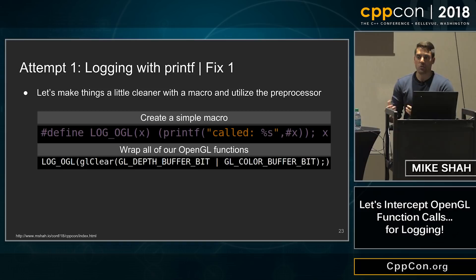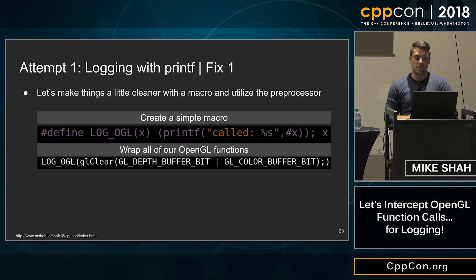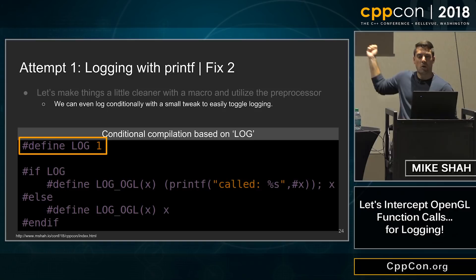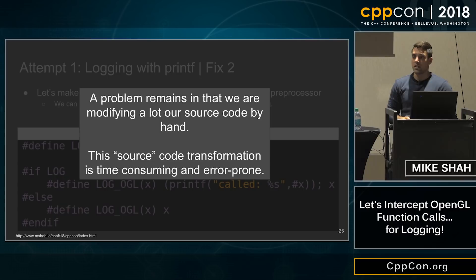We can improve it just a little bit — make things cleaner with a macro, utilizing the preprocessor. I've defined a log OpenGL macro here; we'll just print what was called and then actually do the thing. A little bit better. And we can keep improving this incrementally — give developers a conditional compilation so they can turn logging on by flipping a bit. Not too bad — lightweight if you're doing a quick debug. But the problem still remains that we're modifying a lot of source code. The source transformation could be error-prone and time-consuming. So we want to do a little bit better here.